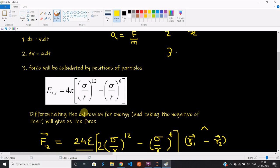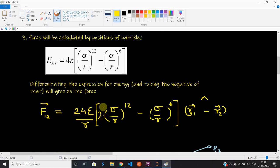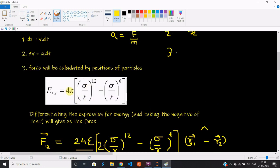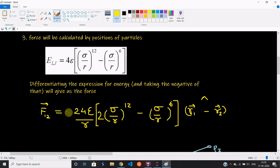If we have the expression for potential energy, then we can differentiate it and take the negative of it to find the force. Just keep in mind that epsilon and sigma are constants. If we differentiate this, we get this expression.